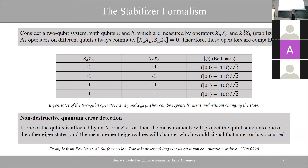The stabilizer operators commute because they act on different qubits, which means they are compatible and we can measure them at different times. Looking at the Bell basis for this two-qubit system, each Bell state has a different combination of plus-one and minus-one eigenvalues — it doesn't repeat even once. This means we can uniquely identify each state by its eigenvalue pattern.